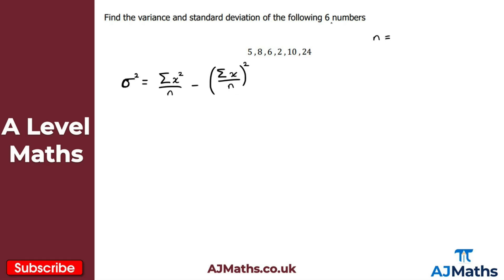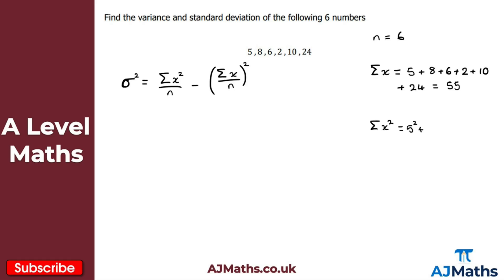n is the sample size, which is 6. Σx is the sum of the six numbers: 5 + 8 + 6 + 2 + 10 + 24 = 55. Then Σx² is the sum of each number squared: 5² + 8² + 6² + 2² + 10² + 24². Putting that into the calculator gives 805.